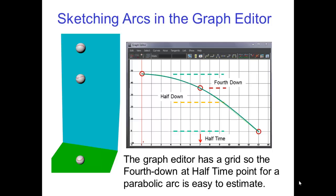The graph editor has a grid, so the fourth down at half time point for a parabolic arc is easy to estimate. Just be sure that at the apex, the curve is flat.